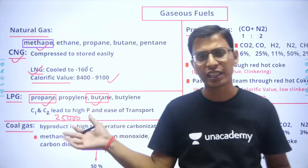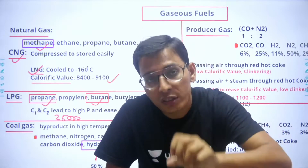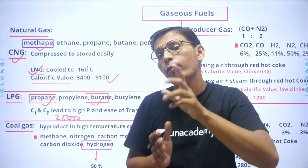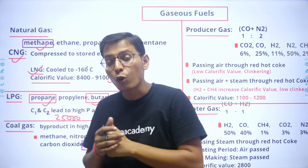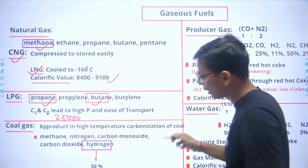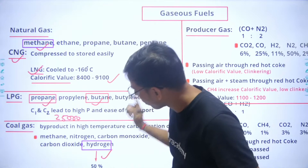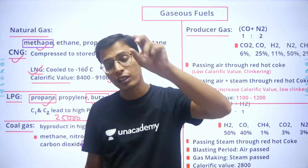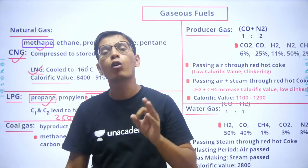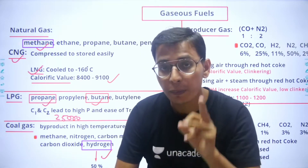Coal gas, which is frequently asked in exams, is generally a byproduct of the coke oven process for making coke from coal. The coke oven gas has a major fraction of hydrogen, along with methane, nitrogen, carbon monoxide, and carbon dioxide. This hydrogen is also utilized for ammonia production in the ammonia plant. The coke oven process is also a route for production of hydrogen gas.